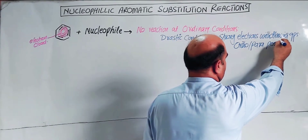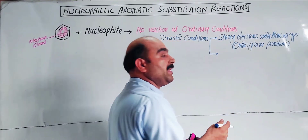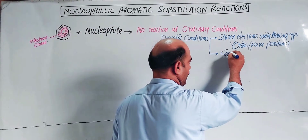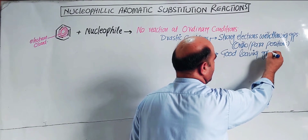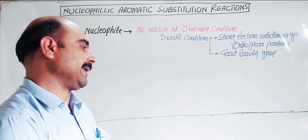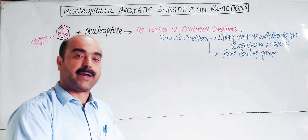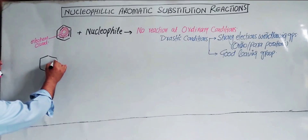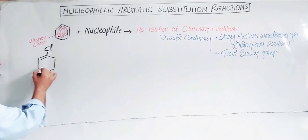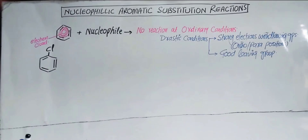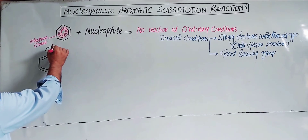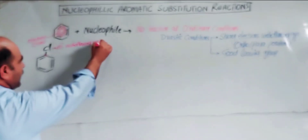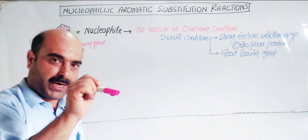The strong electron-withdrawing groups attached to the benzene ring activate the ortho and para positions. The second condition involves a good leaving group attached to the ring. The leaving group facilitates the nucleophile substitution. The nitro group is the classic example of a strong electron-withdrawing group used in these reactions.